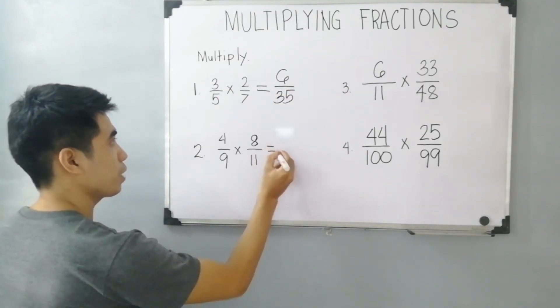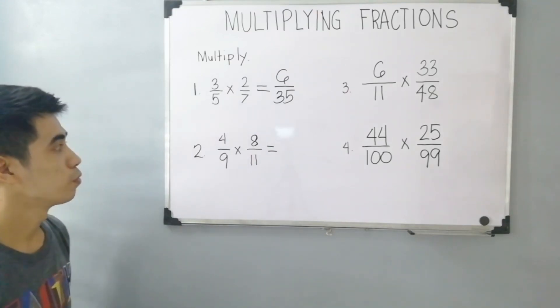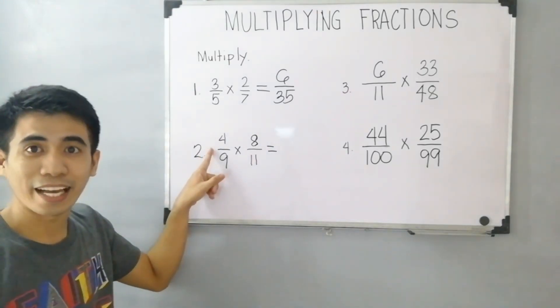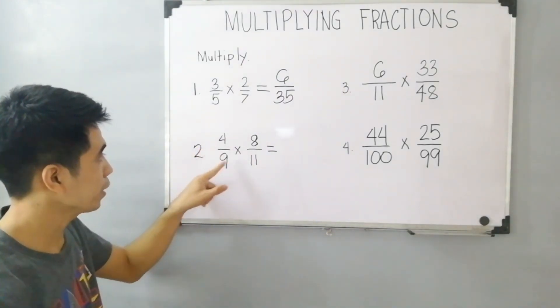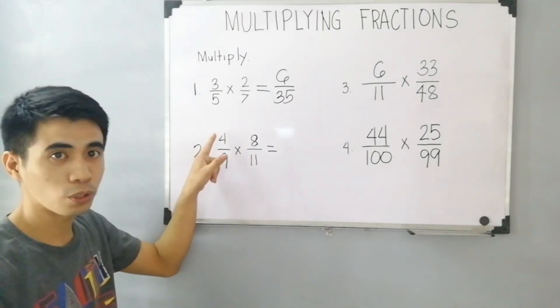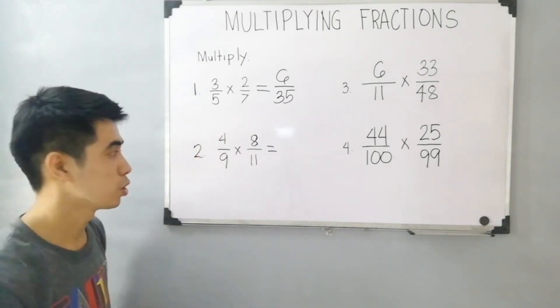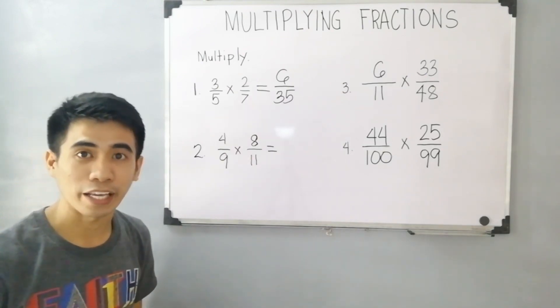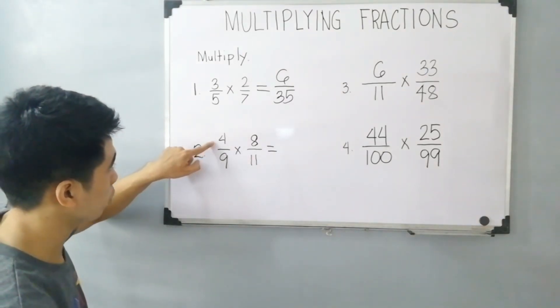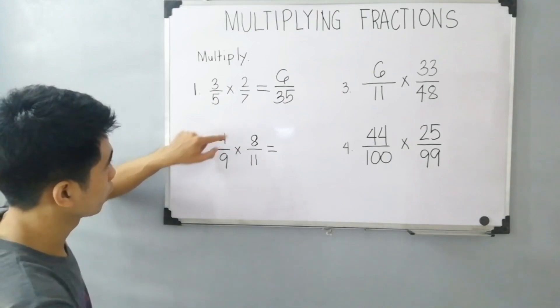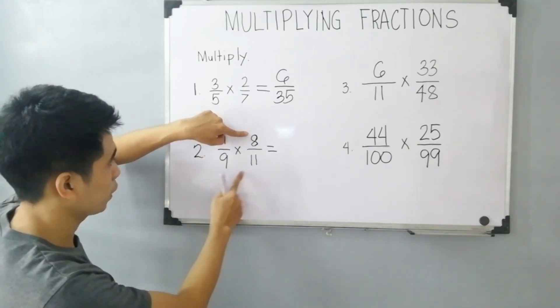For item number 2, again, analyze 4 over 9 times 8 over 11 if numerators and denominators can simplify. 4 cannot simplify to 9 and 11. As well as 8 cannot simplify to 9 and 11.